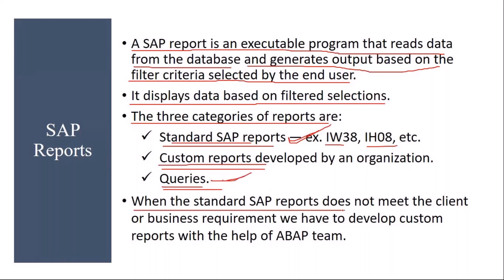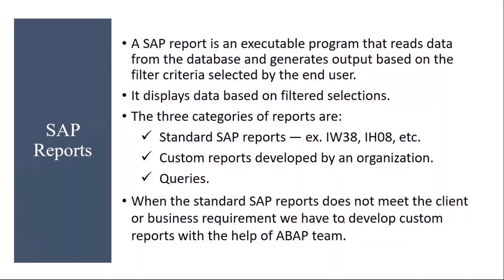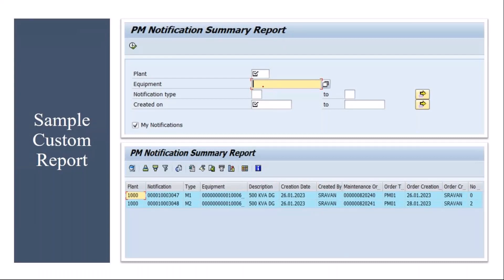When the standard SAP reports do not meet the client or business requirement, you have to develop custom reports with the help of the ABAP team. As a functional consultant, you need to coordinate with the technical team, provide the functional specification document, and give your inputs. Once they develop the report, you have to test it. Once tested and approved by the business team, you move it from development to quality and then to the production system.